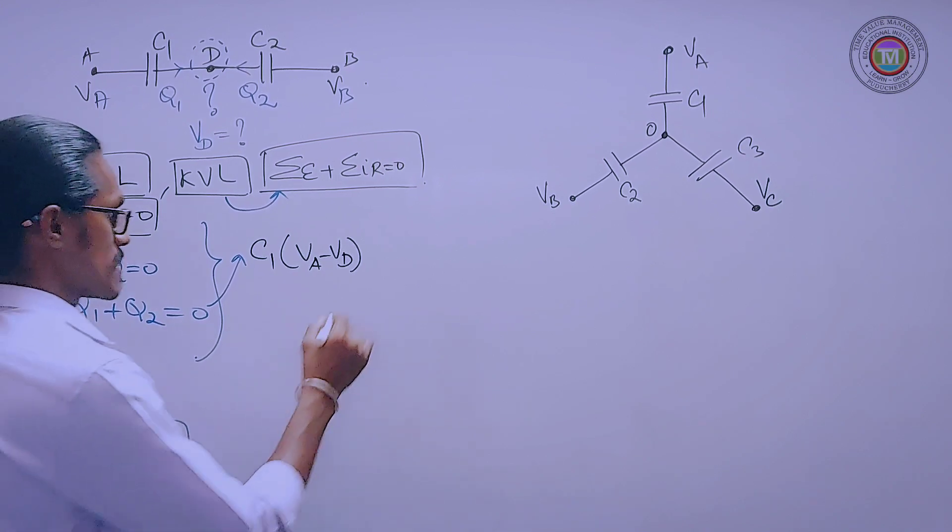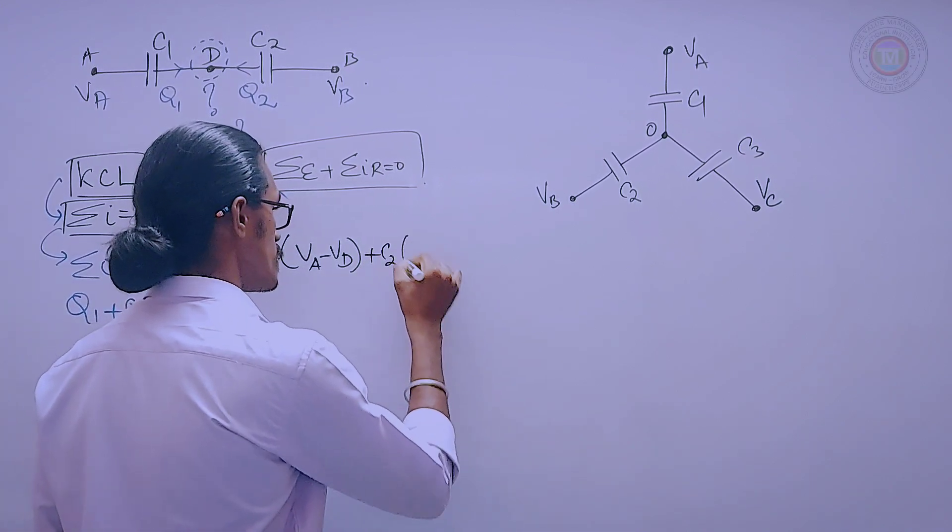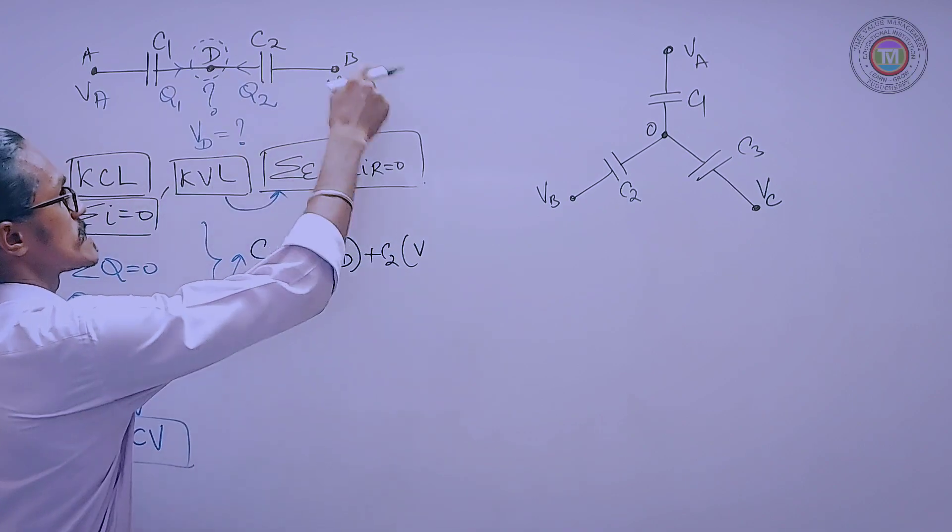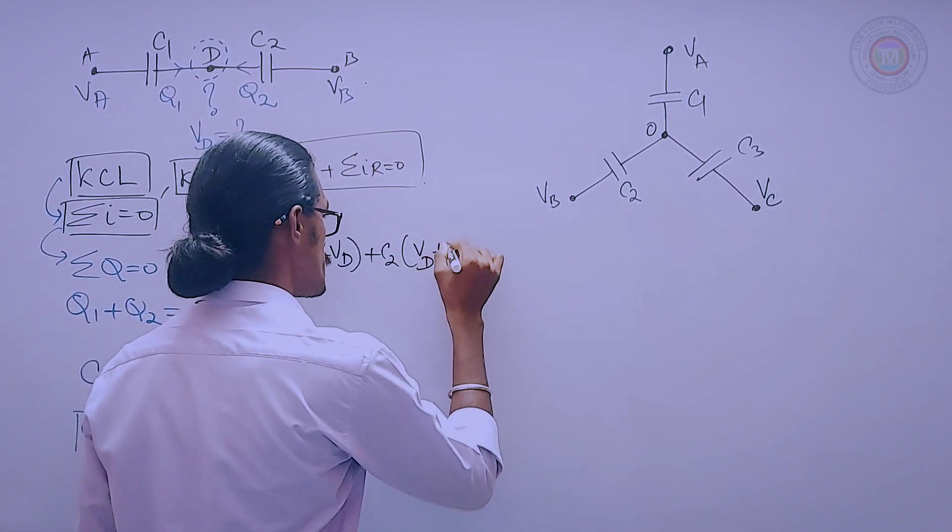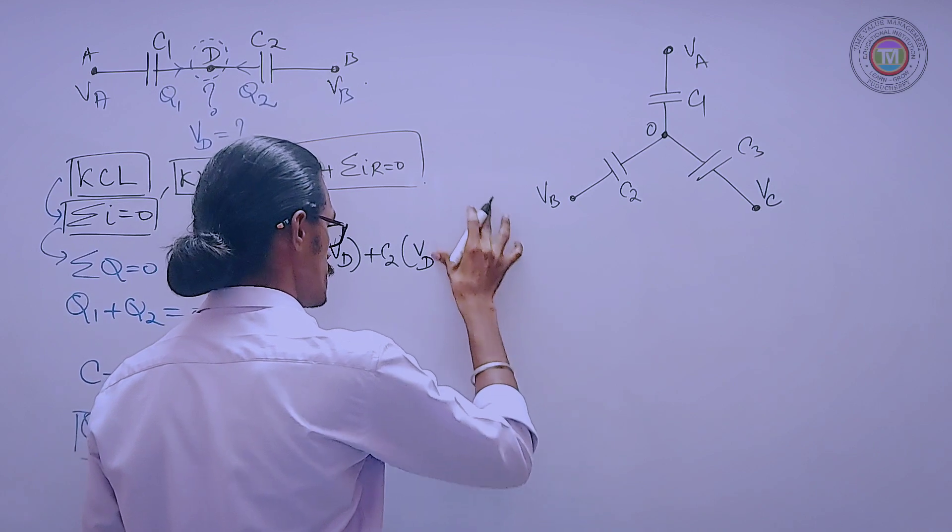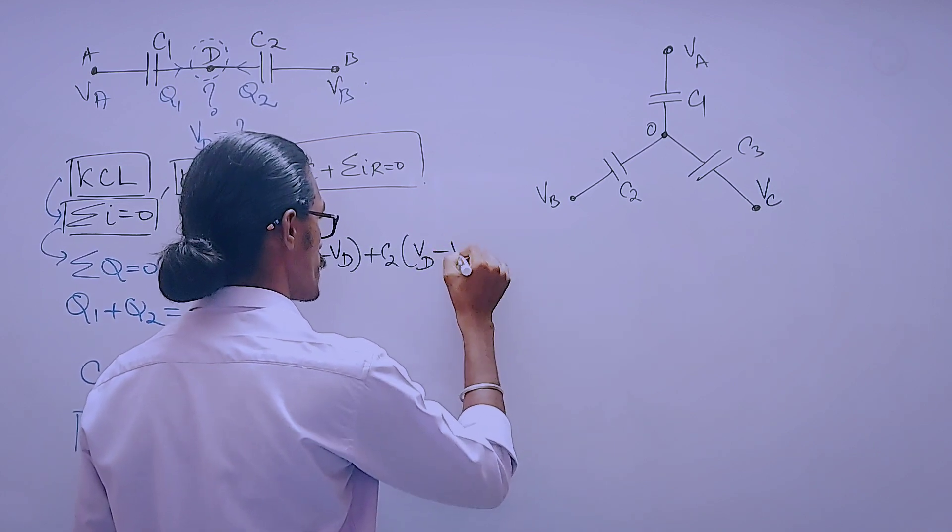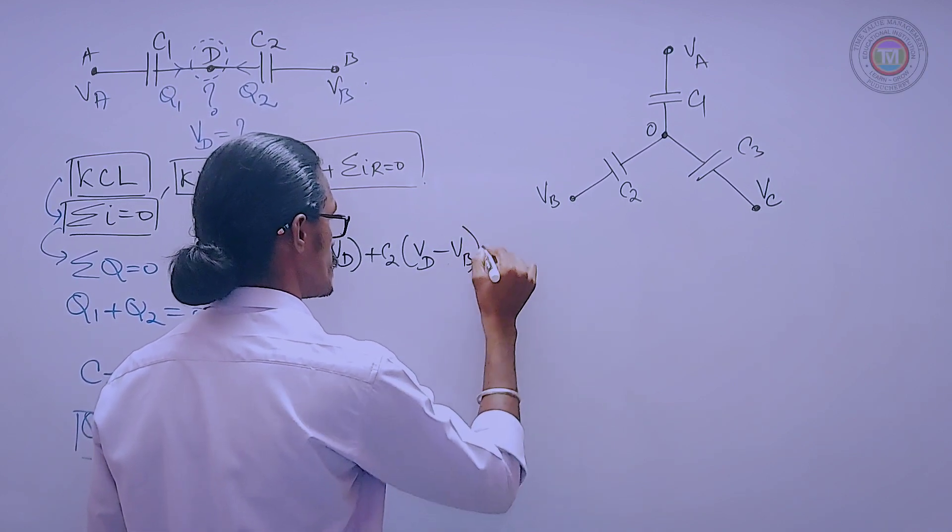That is C2 times the potential difference. So it is VD minus VB equal to zero.